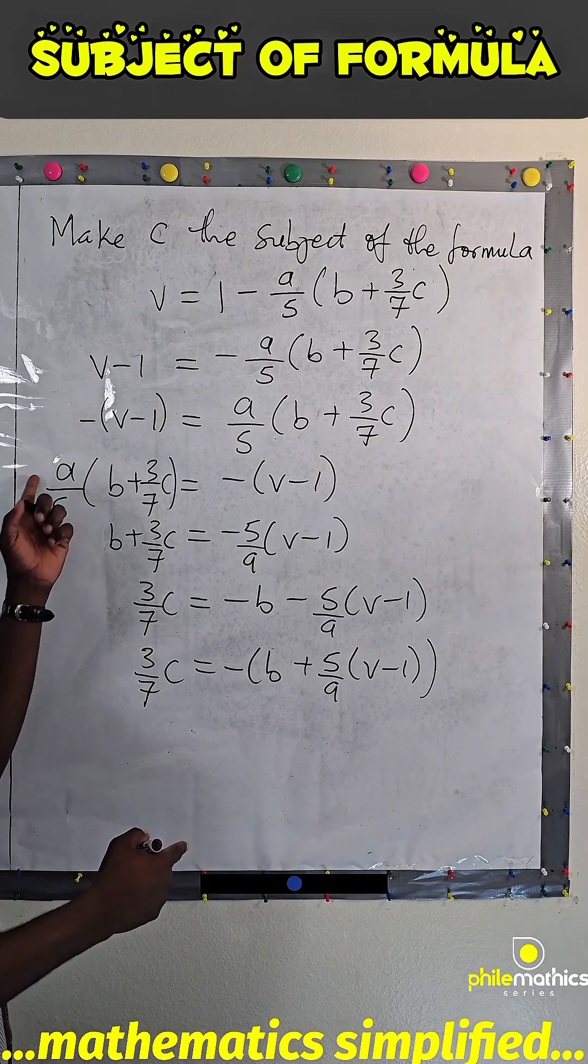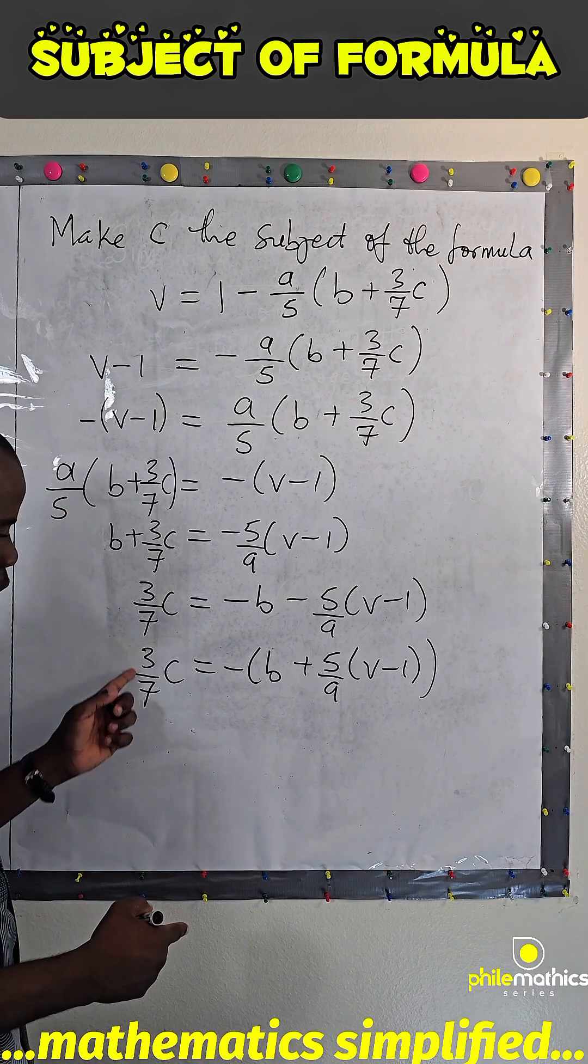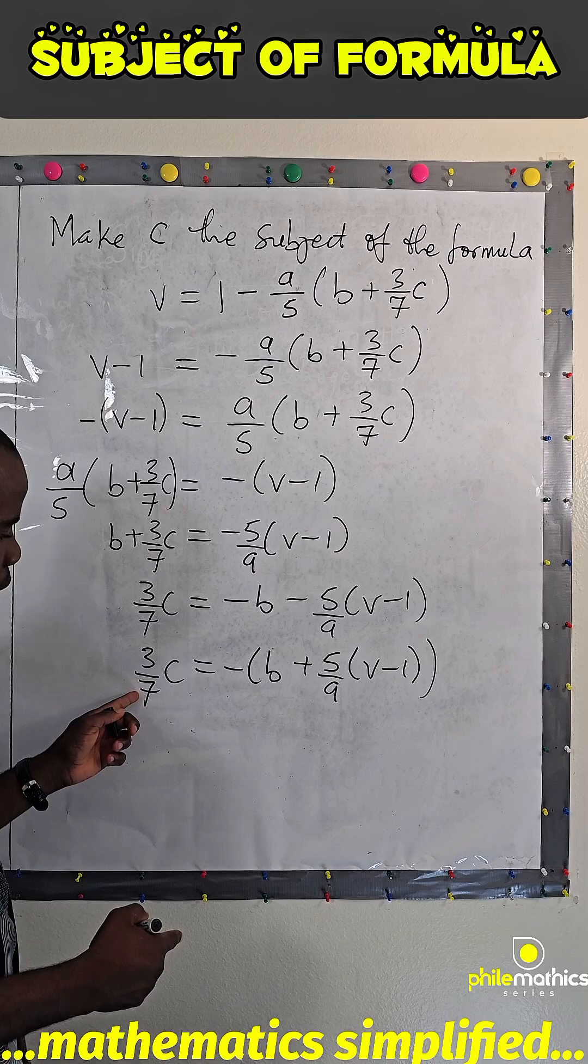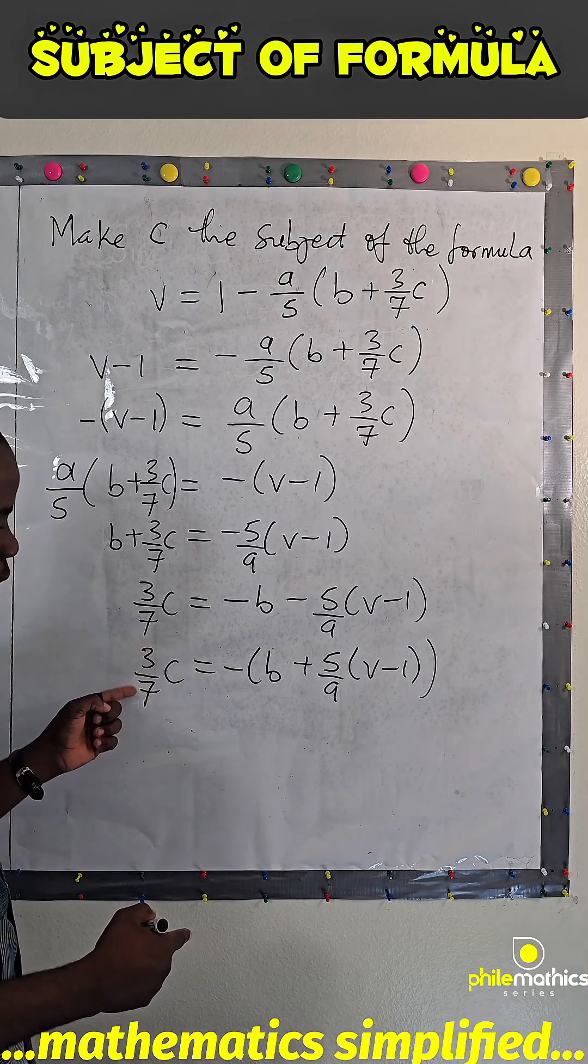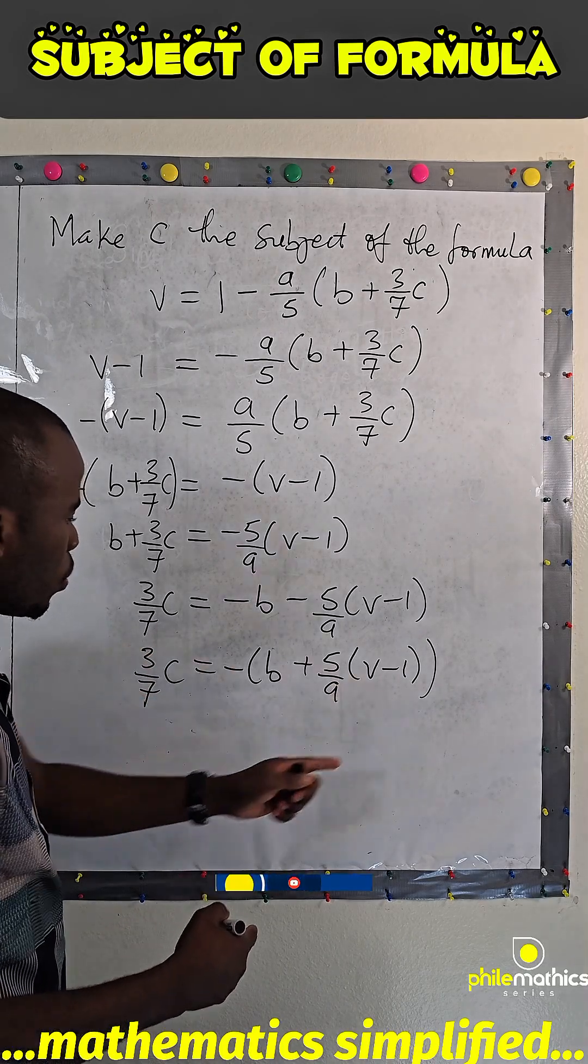Now, the same thing I did here, to eliminate 3 over 7, I can multiply by the multiplicative inverse, which is 7 over 3, on both sides.